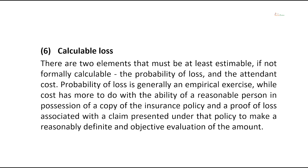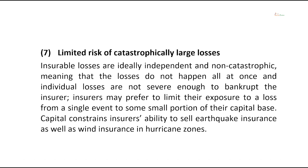Fifth characteristic is affordable premium. If the likelihood of an insured event is so high, or the cost of the event so large, that the resulting premium is large relative to the amount of protection offered, it is not likely that the insurance will be purchased or offered. The premium cannot be so large that there is not a reasonable chance of significant loss to the insurer. Sixth characteristic is calculable loss. There are two elements that must be at least estimable: the probability of loss and the attendant cost. Probability of loss is generally an empirical exercise, while cost relates to a reasonable, definite and objective valuation of the amount.